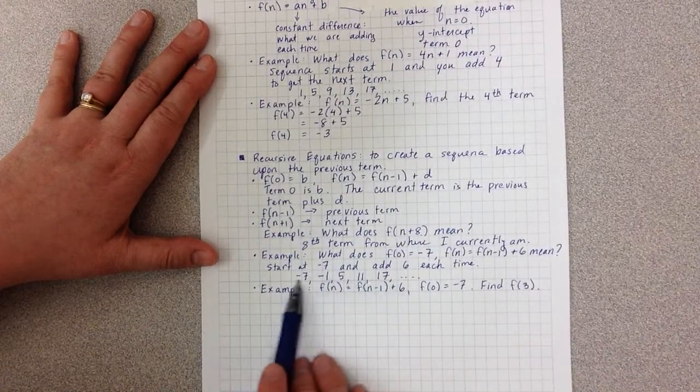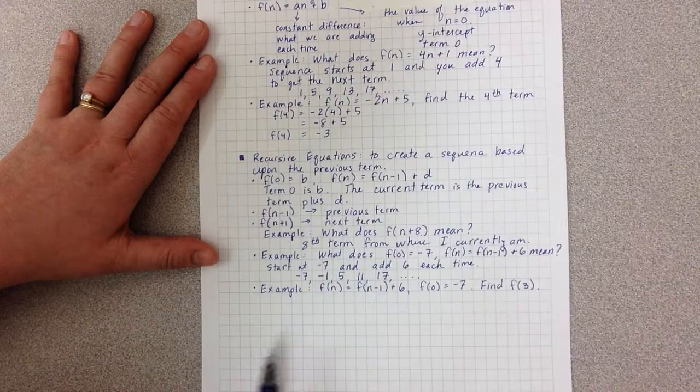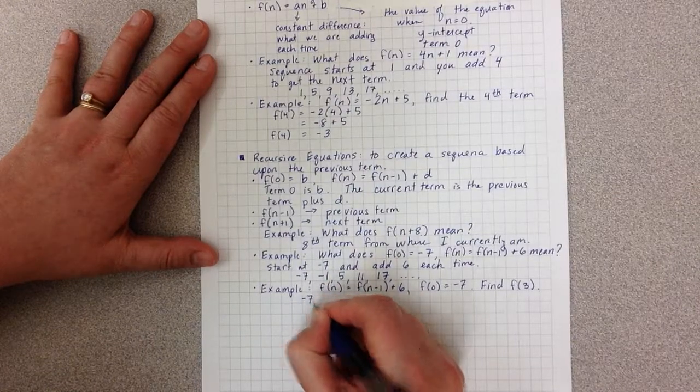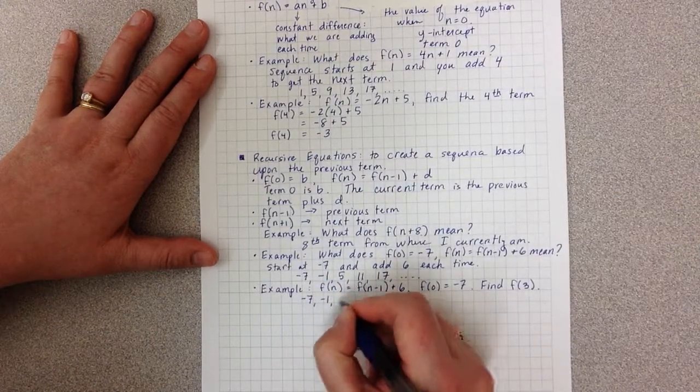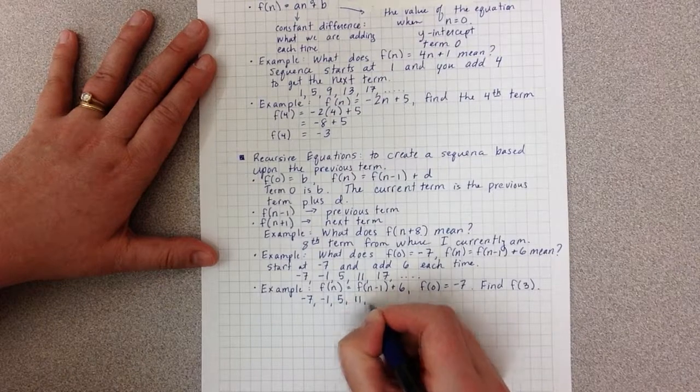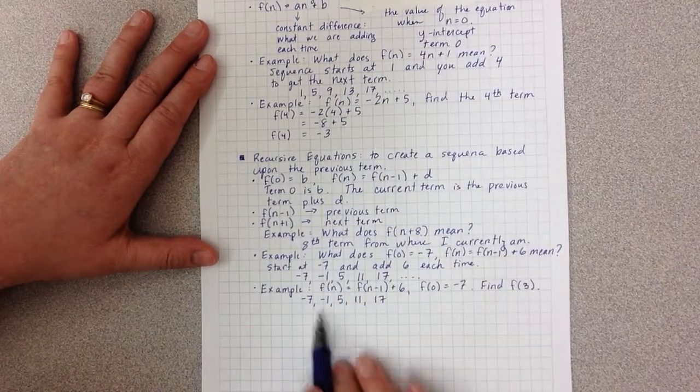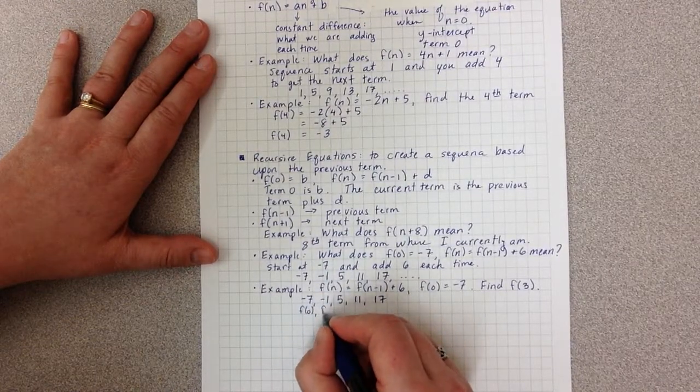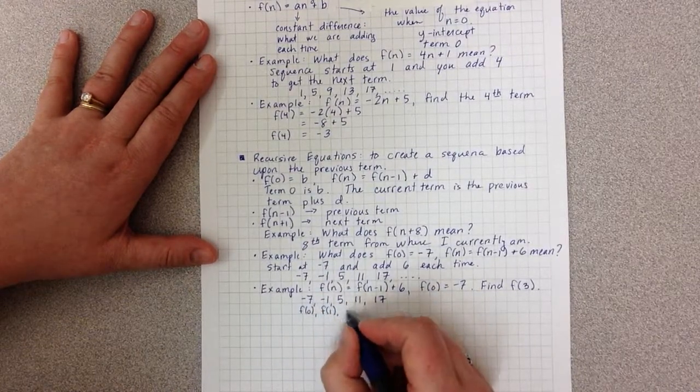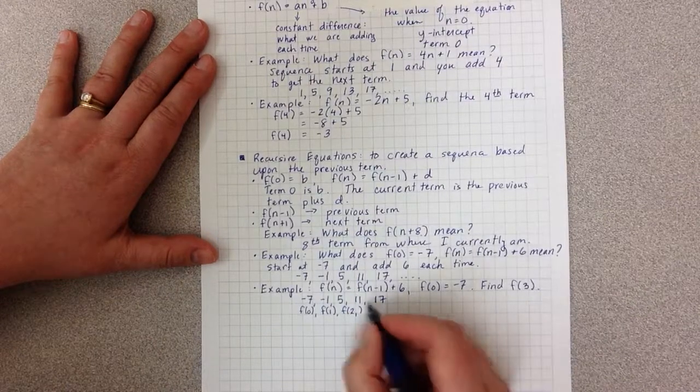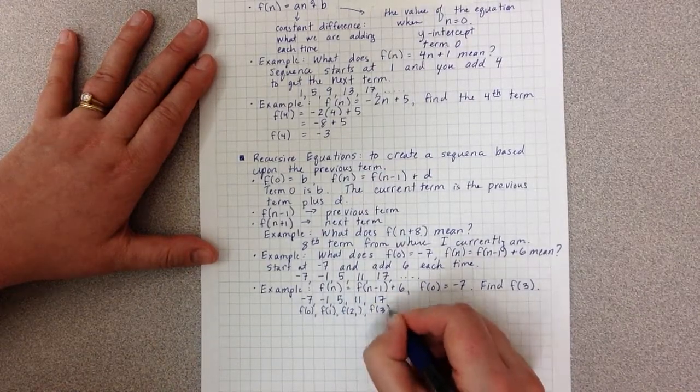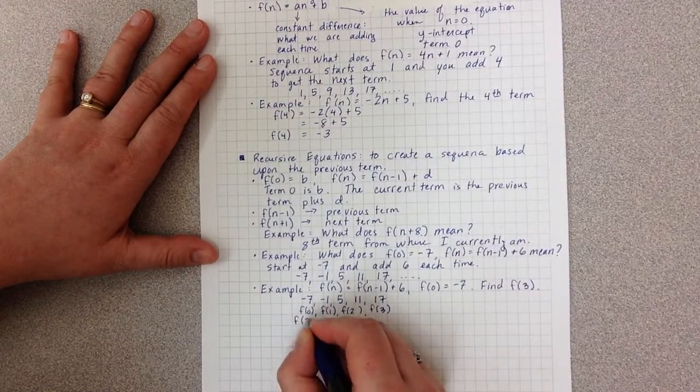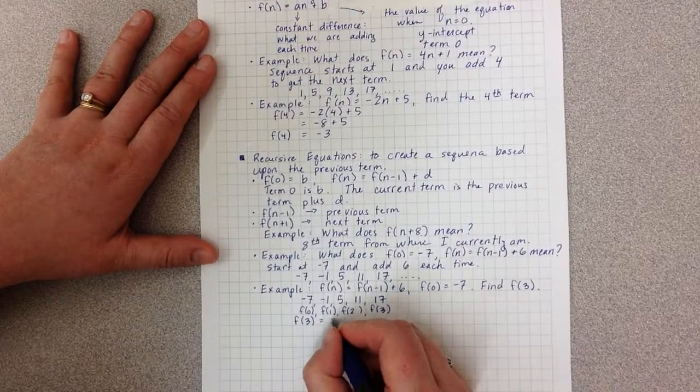However, if we look at the list we created right here, which would be the list I would create for this same problem, they're the same problem. So negative 7, negative 1, 5, 11, 17. So this is f(0), which makes this one f(1), which makes this one f(2), which makes 11 f(3). So now we can say f(3) equals 11.